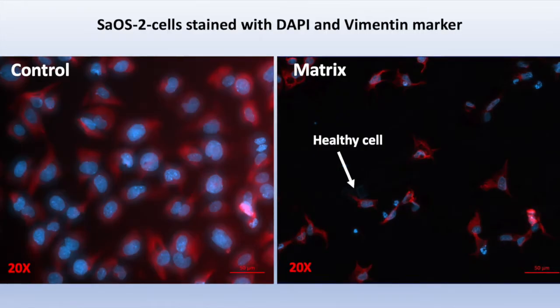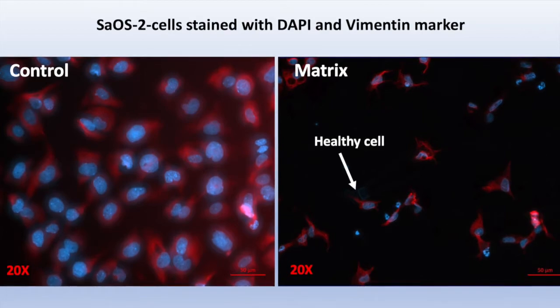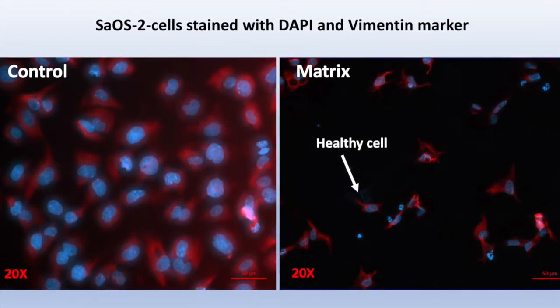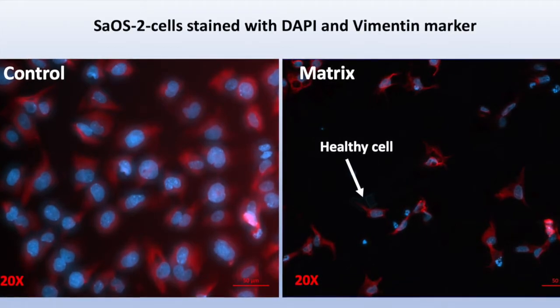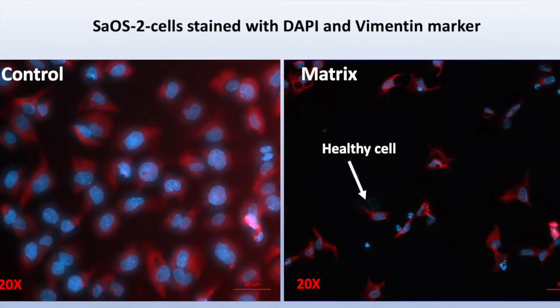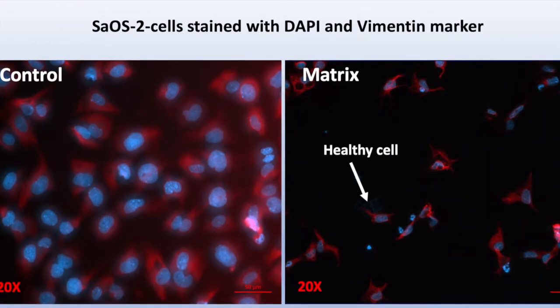After the successful colonization of fibroblasts, we tested other cell lines on our scaffolds. First, we tested an easy-care cell line, SaOS-2 cells. We performed a DAPI and vimentin immunostaining.